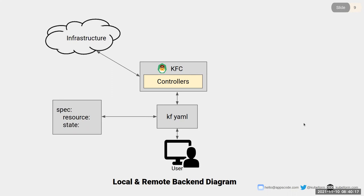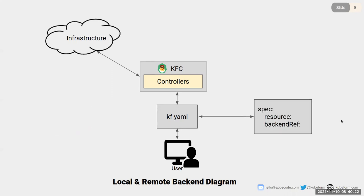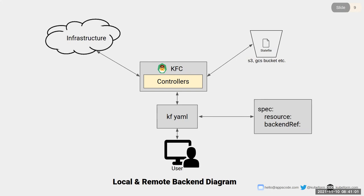When the user uses the local backend, the KubeForm controller stores that state in the KubeForm resource YAML under the spec.state field. Now if the user wants to use remote backend, they provide a Kubernetes secret reference under spec.backendRef, which holds the remote backend configuration. When applied, the KubeForm controller reconciles it and the state file is stored in the remote bucket specified by the backendRef — for example S3 or GCS — and anyone with access to that bucket can fetch the state.